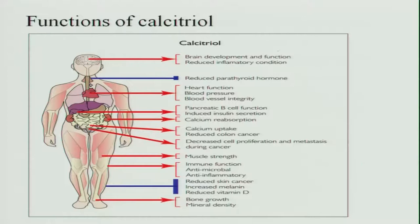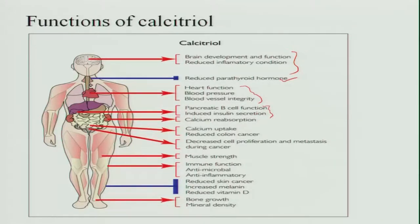The functions of calcitriol span different parts of the body. In the brain, it supports brain development and function, and reduces inflammatory conditions of the brain and reduces parathyroid hormone. For the heart, it supports heart function, blood pressure, and blood vessel integrity. In the pancreas, it supports B-cell function, induces insulin secretion, and calcium reabsorption, thereby reducing the incidence of diabetes. Calcium uptake is improved, and it reduces colon cancer and decreases cell proliferation and metastasis.